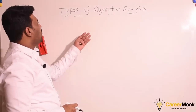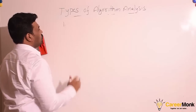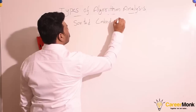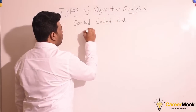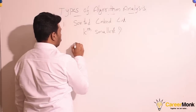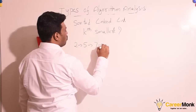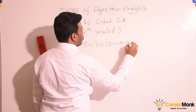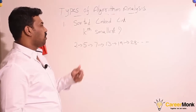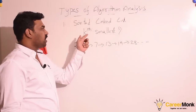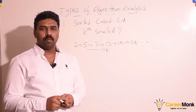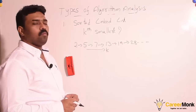Now let us analyze some algorithms to get a clear understanding of the concept. Given a sorted linked list, how do we find the kth smallest element? Since the elements are in increasing order, to find the kth smallest element, the obvious solution is to simply iterate through k nodes. For this simple solution, how do we analyze the best case, worst case, and average case?